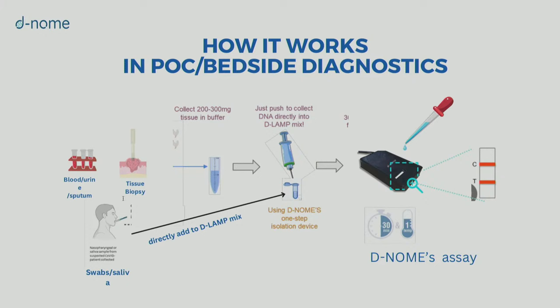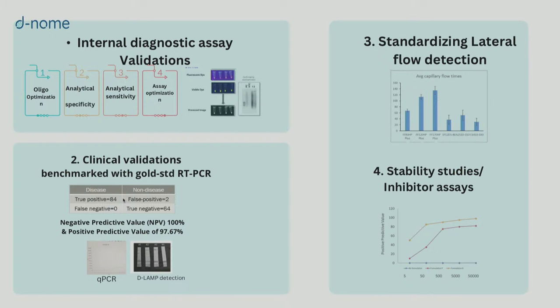How it works: we collect tissue, perform a one-step DNA isolation that can be done at the point of care without any laboratory equipment. For swabs or saliva samples, we can directly add to our enzyme mix. The isolated DNA goes into our enzyme mix, which is put into a small device. After just 30 minutes, there is a strip in the device showing lines — very similar to a lateral flow assay or rapid antigen test — allowing easy visualization of the result by anybody, requiring no complex skill compared to RT-PCR or PCR outputs.